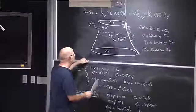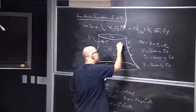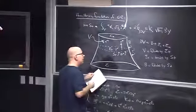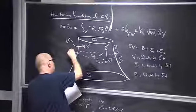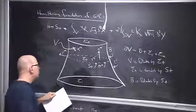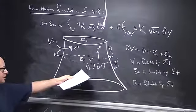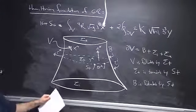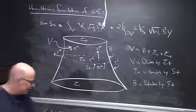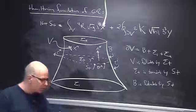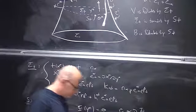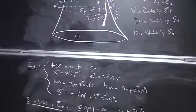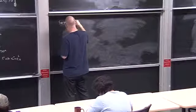I'll introduce one more thing: we have the normal vector N_alpha on each hypersurface sigma_T, and the normal vector to B — which is the same as the normal vector to ST embedded in sigma_T — is going to be a four-dimensional vector R_alpha, the spacetime analog of what we have intrinsically. The next step is to embed ST directly in spacetime.